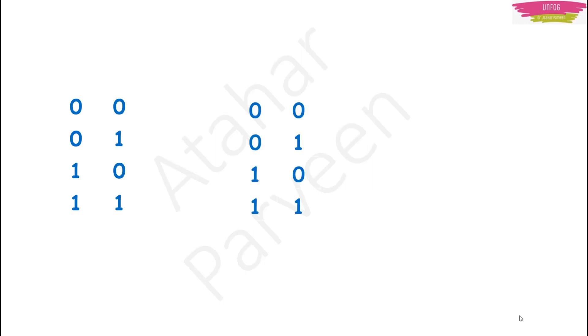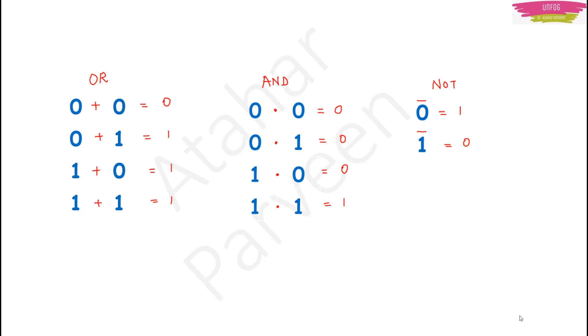We are talking about two inputs here. There will be two inputs and one output. These two inputs will be either 0s or 1s, or any one will be 0 or any one will be 1. We make a table to write those inputs and the output we get — we call these tables truth tables. We can make truth tables for all three operations: OR, AND, and NOT.